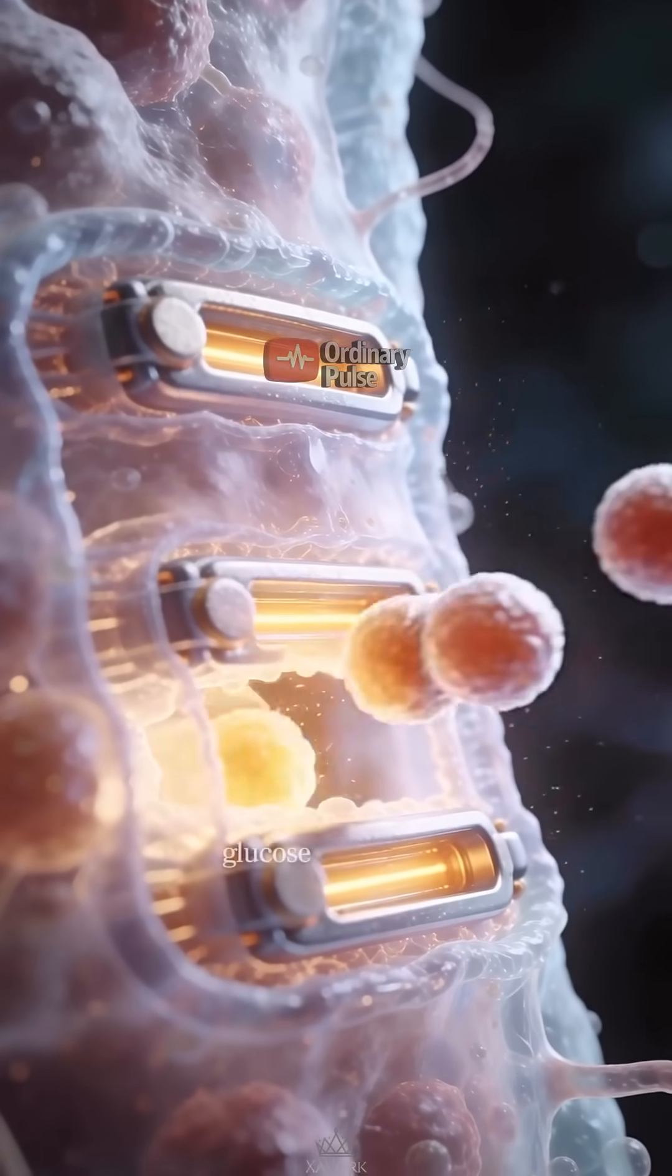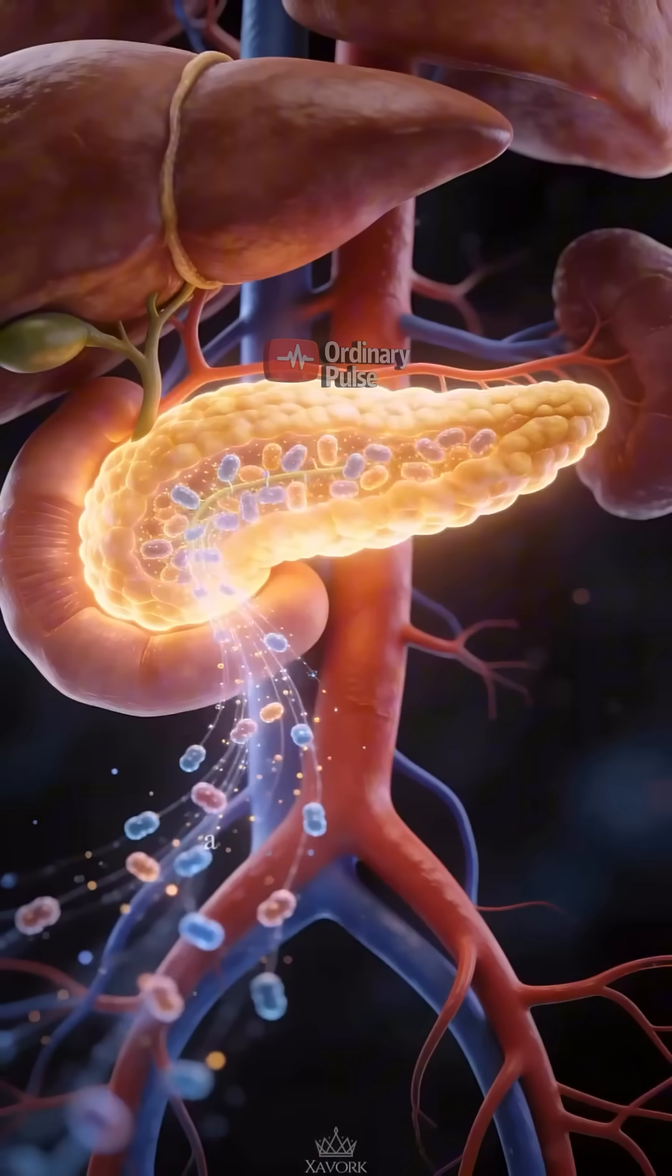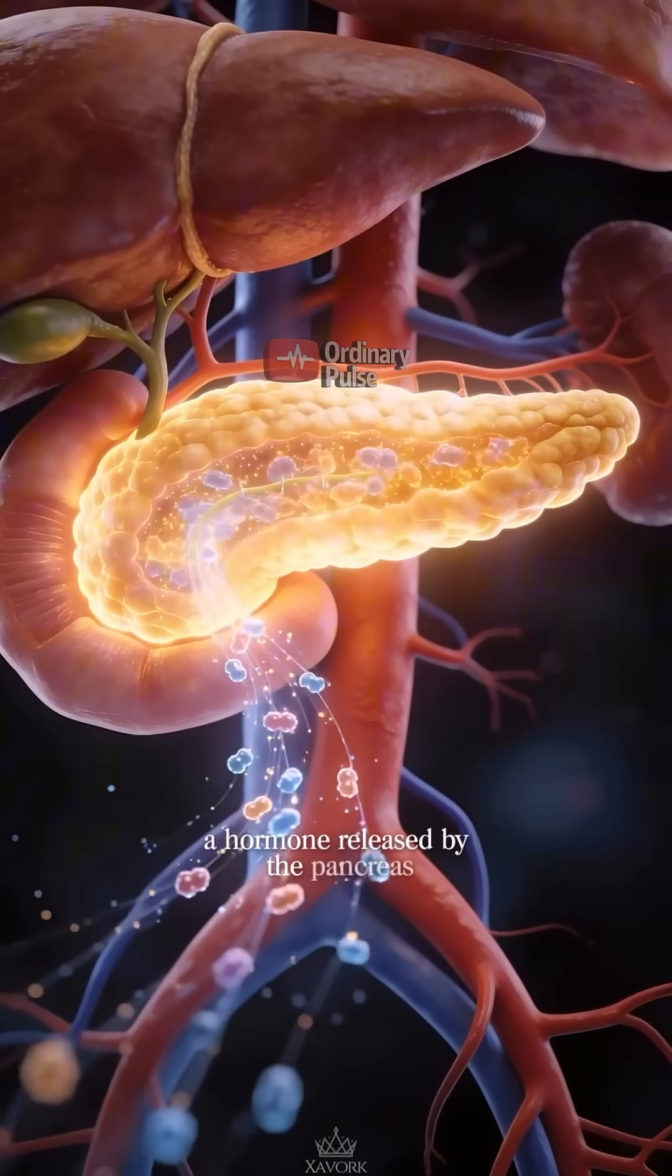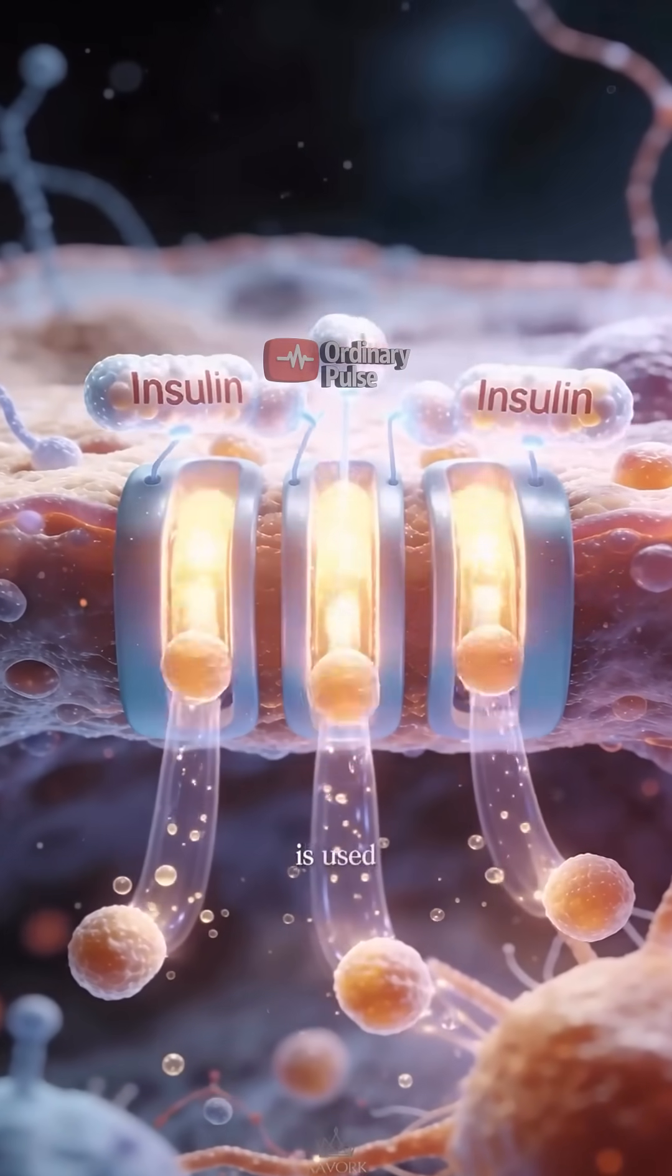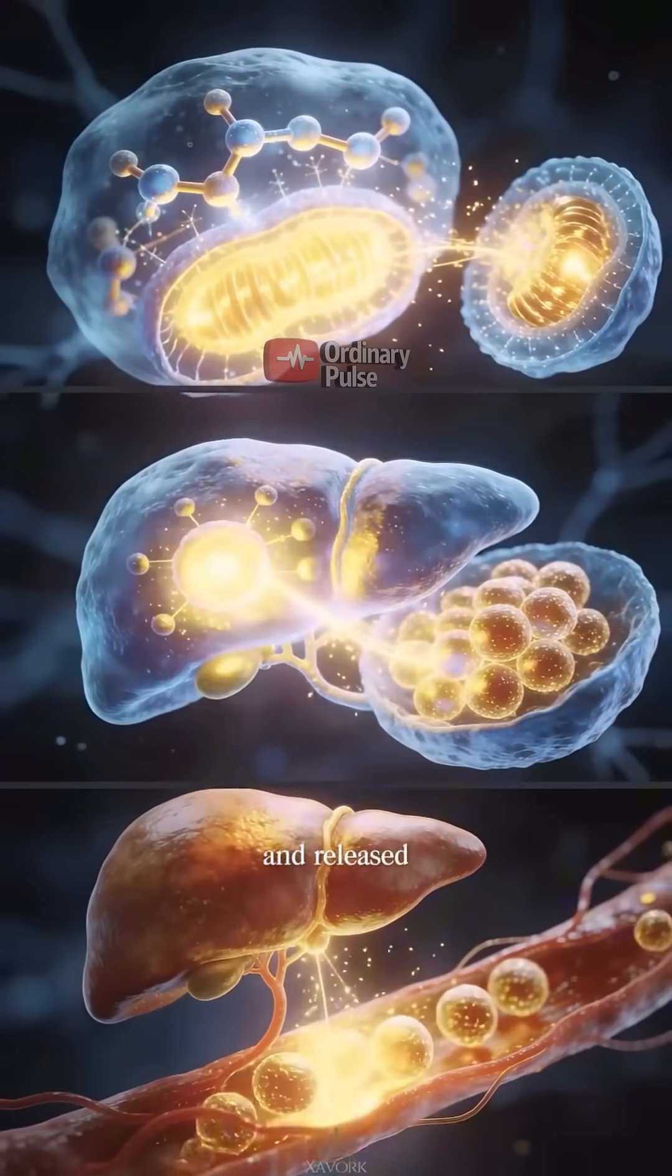Here, glucose enters cells with the help of insulin, a hormone released by the pancreas. Together, they regulate how energy is used, stored, and released.